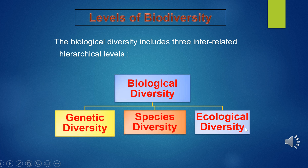As mentioned previously, the term biodiversity was coined by Edward Wilson to describe the diversity at all levels of biological organization ranging from macromolecules inside the cell to biomes. It is organized into three interrelated hierarchical levels: genetic diversity, species diversity, and ecological diversity or community diversity.